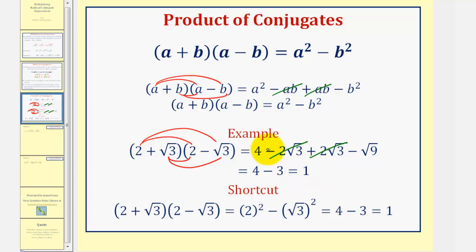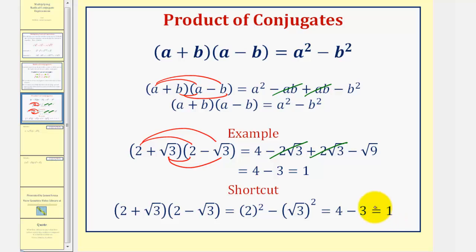The two middle terms are opposites and sum to zero. The square root of nine equals three, so this simplifies to four minus three, which equals one. Using the shortcut, A equals two and B equals square root of three, so we have two squared minus square root of three squared, which gives us four minus three, which also equals one.